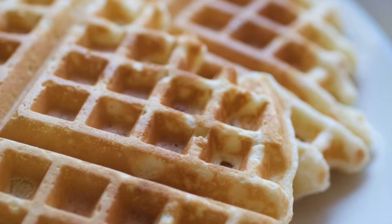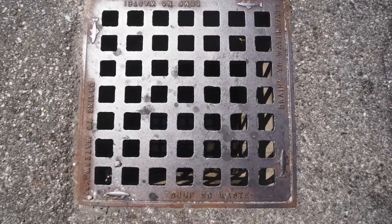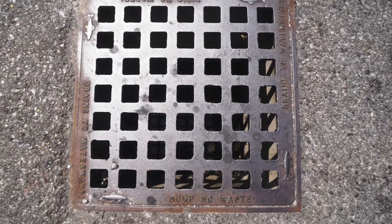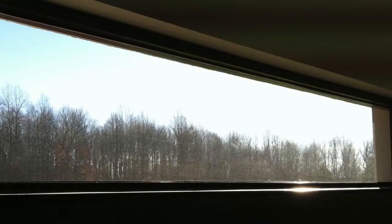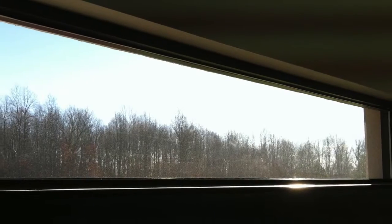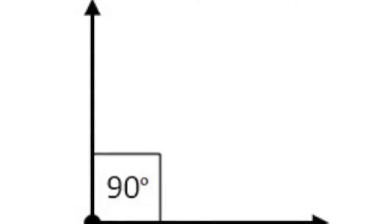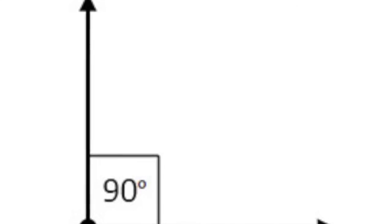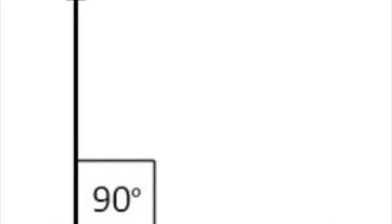A square has four equal sides and four equal angles. A rectangle, however, has two sets of equal sides and four equal angles. Both rectangles and squares have 90 degree angles.